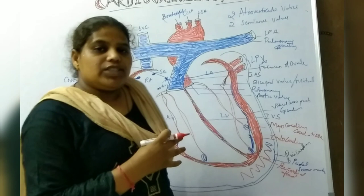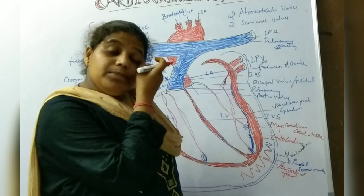The pericardial fluid helps in the smooth functioning of the heart, prevents over-stretching, and anchors the heart by helping in its attachment. These are the functions of the pericardial fluid.